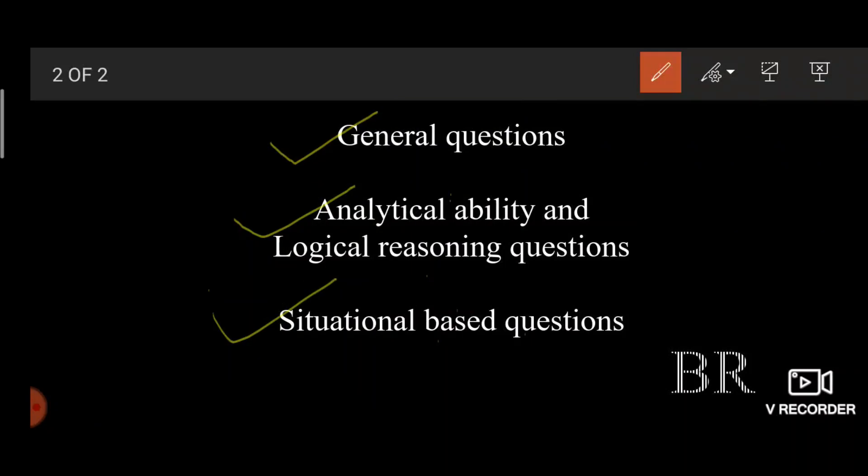They might also ask you about your strengths and weaknesses, and that's all in the first phase. In the second phase they may ask you around three to seven analytical ability and logical reasoning questions together. It all depends upon the interviewer, whether he'll ask you three questions, four or five questions, and it's completely process oriented.